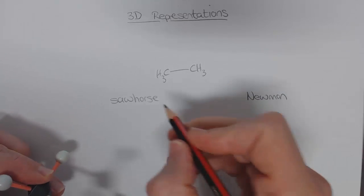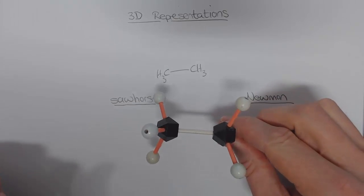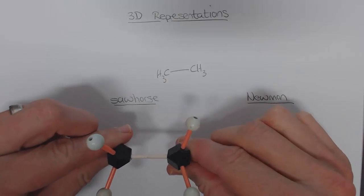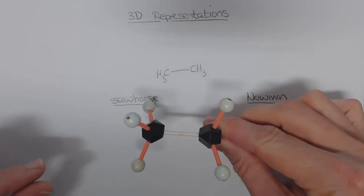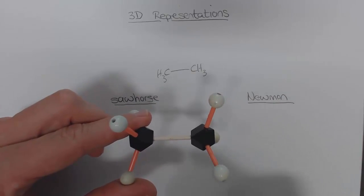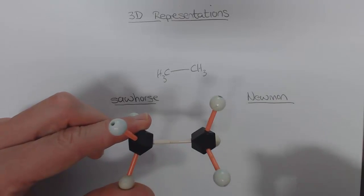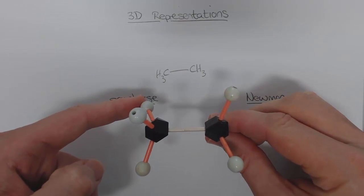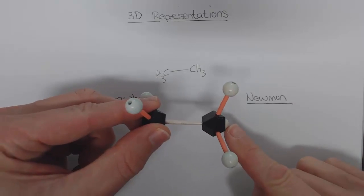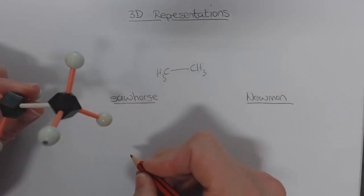Both of these are going to be very important for representing three-dimensional structures of organic compounds. The sawhorse projection looks very much like the structure we have here. What we do with the sawhorse projection is we look at this molecule and put four of the atoms — in this case the hydrogen and the two carbons — all in the plane of the paper.